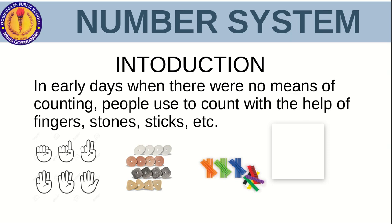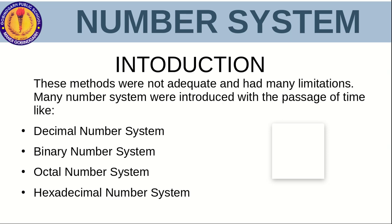In earlier days, when there was no number system, how were people counting? For calculations and counting purposes they were using their hands — fingers, stones, sticks. These things were used in ancient times. When the number system was not invented, these methods were not adequate. They were not optimum for calculations, not up to the mark, and had many limitations. Not all calculations were possible with these systems. If the counting was in large numbers it became very difficult using those old ancient methods.